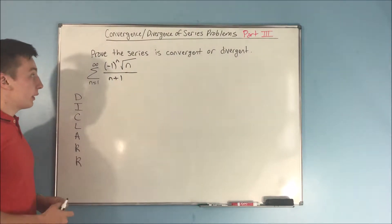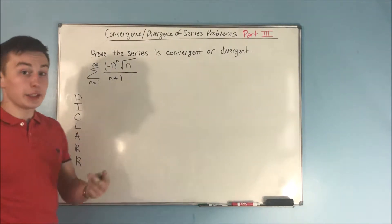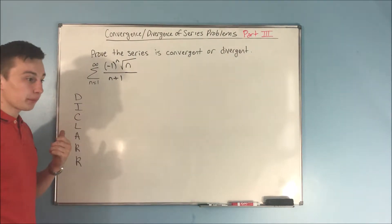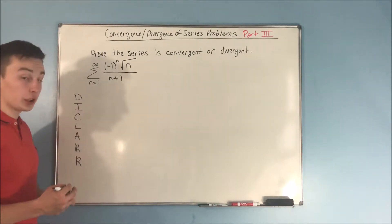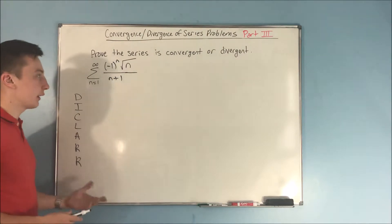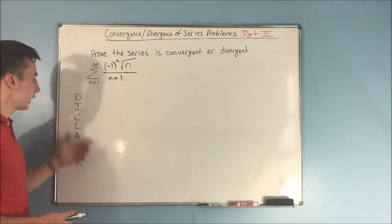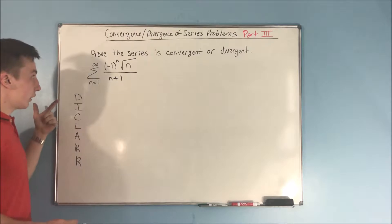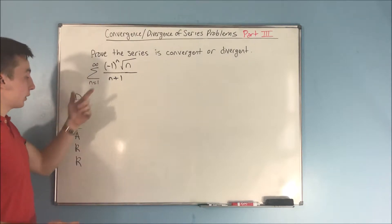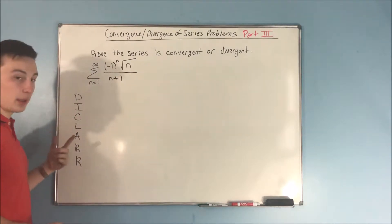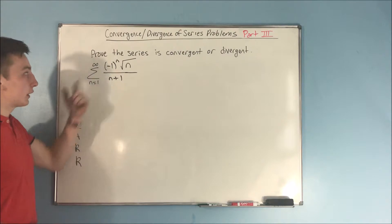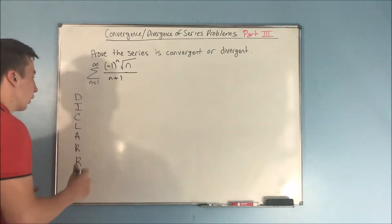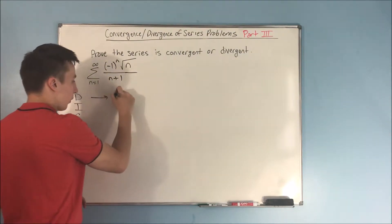Now, we know this is not a p-series, not a geometric series, so we look to our tests. You can first try the test for divergence. But if the test for divergence fails, you're not going to be able to do an integral test, comparison test, or limit comparison test, because there's this negative one to the n here. So let's look at that test for divergence quick.